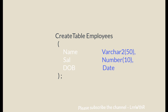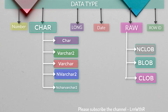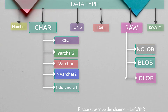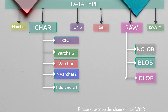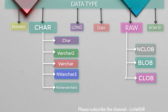Now let's see all the types of data types available in Oracle. I have classified them into six categories: NUMBER, CHARACTER (or STRING), LONG, DATE, RAW, and ROWID. The character or string type is further divided into multiple data types: CHAR, VARCHAR2, VARCHAR, NVARCHAR2, and NCHAR.